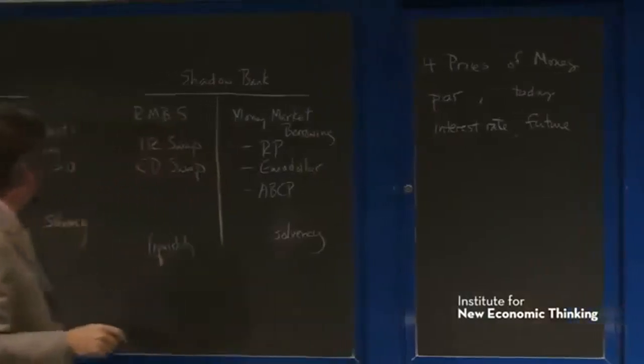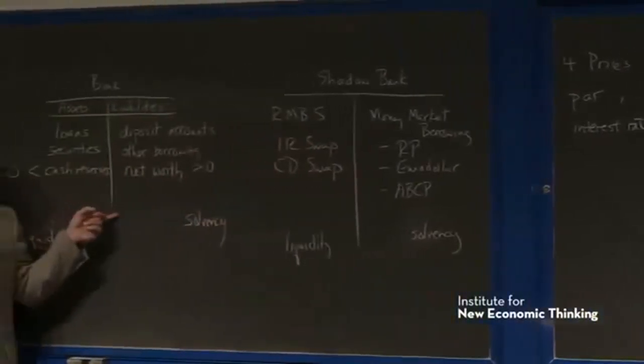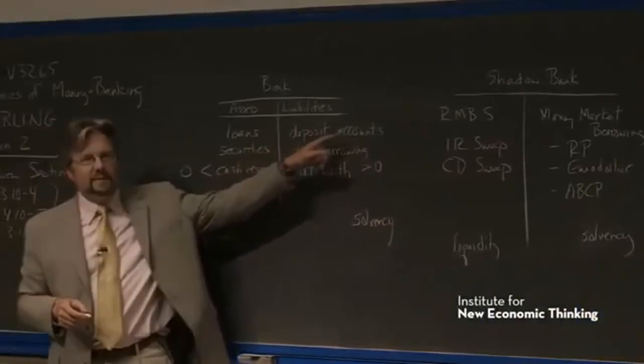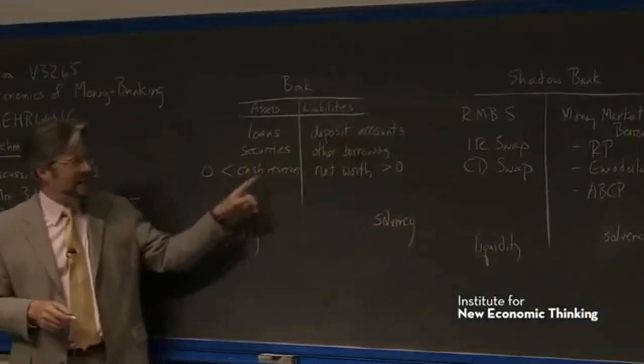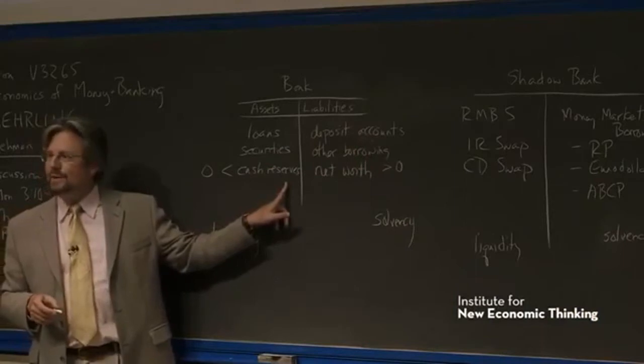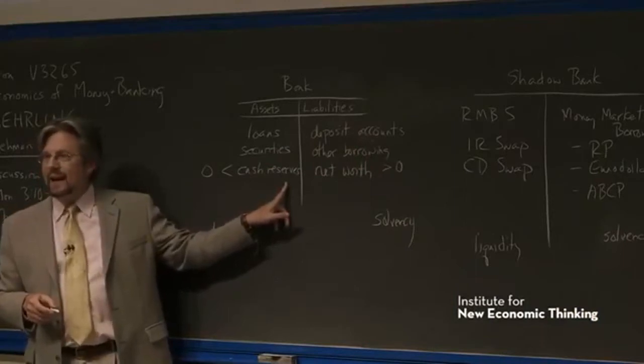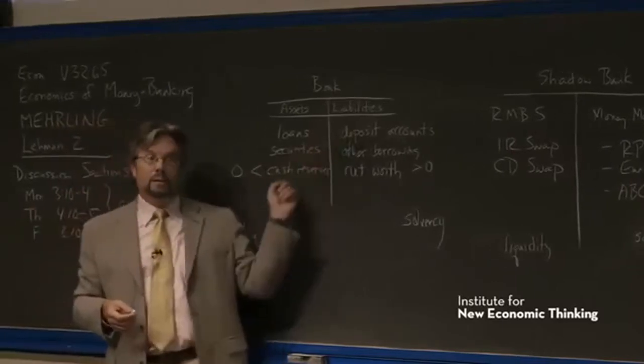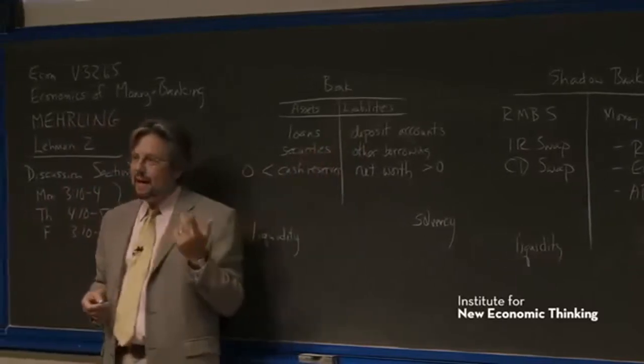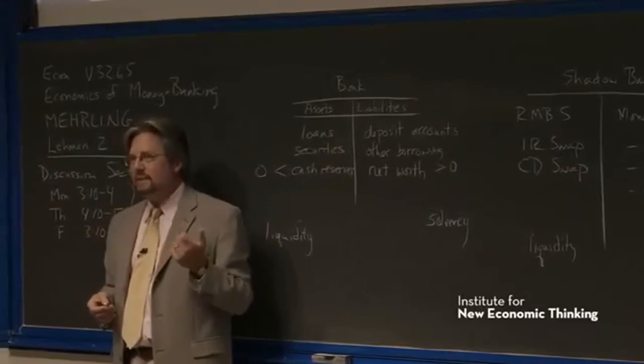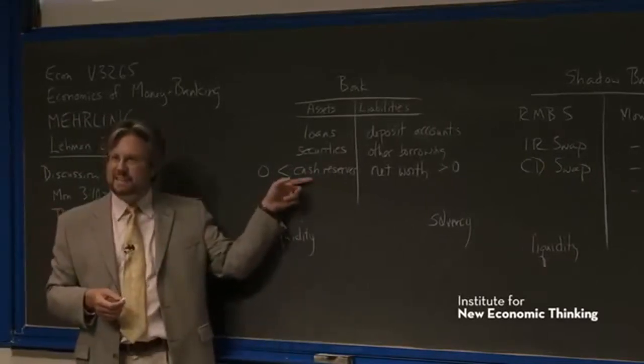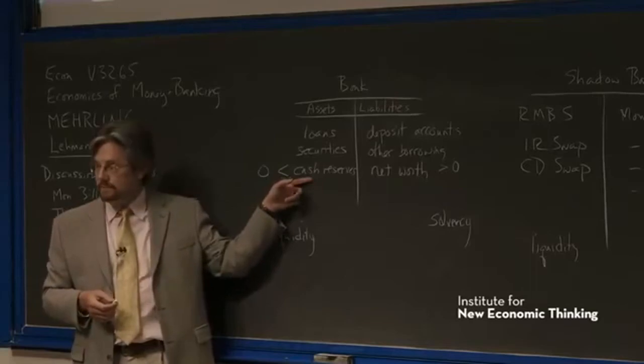For example, you all let me write down this balance sheet without any complaint, and yet what do we have here? We have deposit accounts, money, on this side, and we have cash reserves, money, on this side. And we take this all for granted that they're traded par. That if you have an account at Citibank that says $107, you can go to Citibank and they will give you $107 of these dollars. That's par.